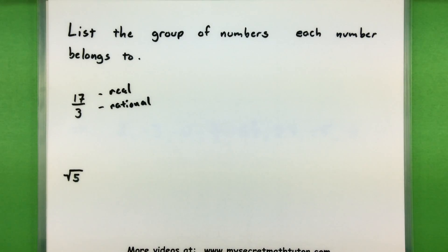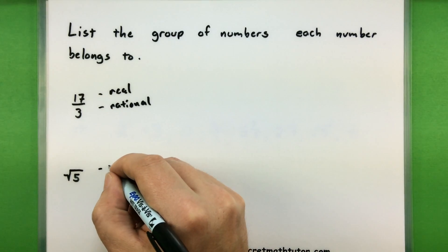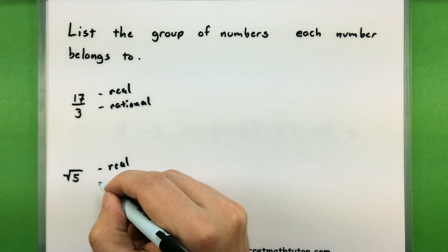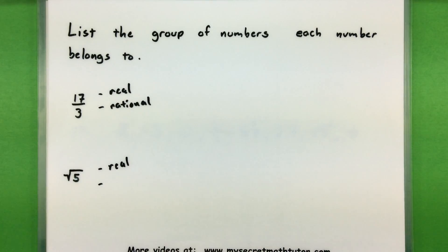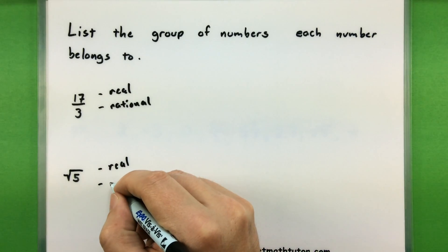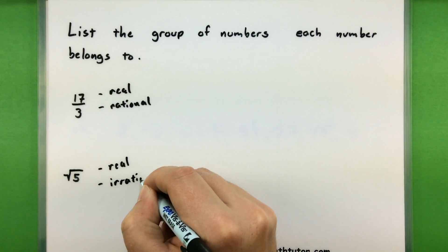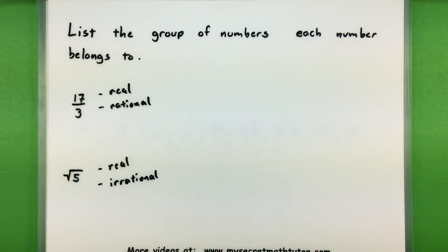Let's try the square root of 5. This is a type of real number — it's in the largest category. Moving down, can I write it as a fraction or not? Square roots of non-perfect-square numbers cannot be written as a fraction, so we will say that this is irrational. There are no further groups beyond that, so let's try out some others.